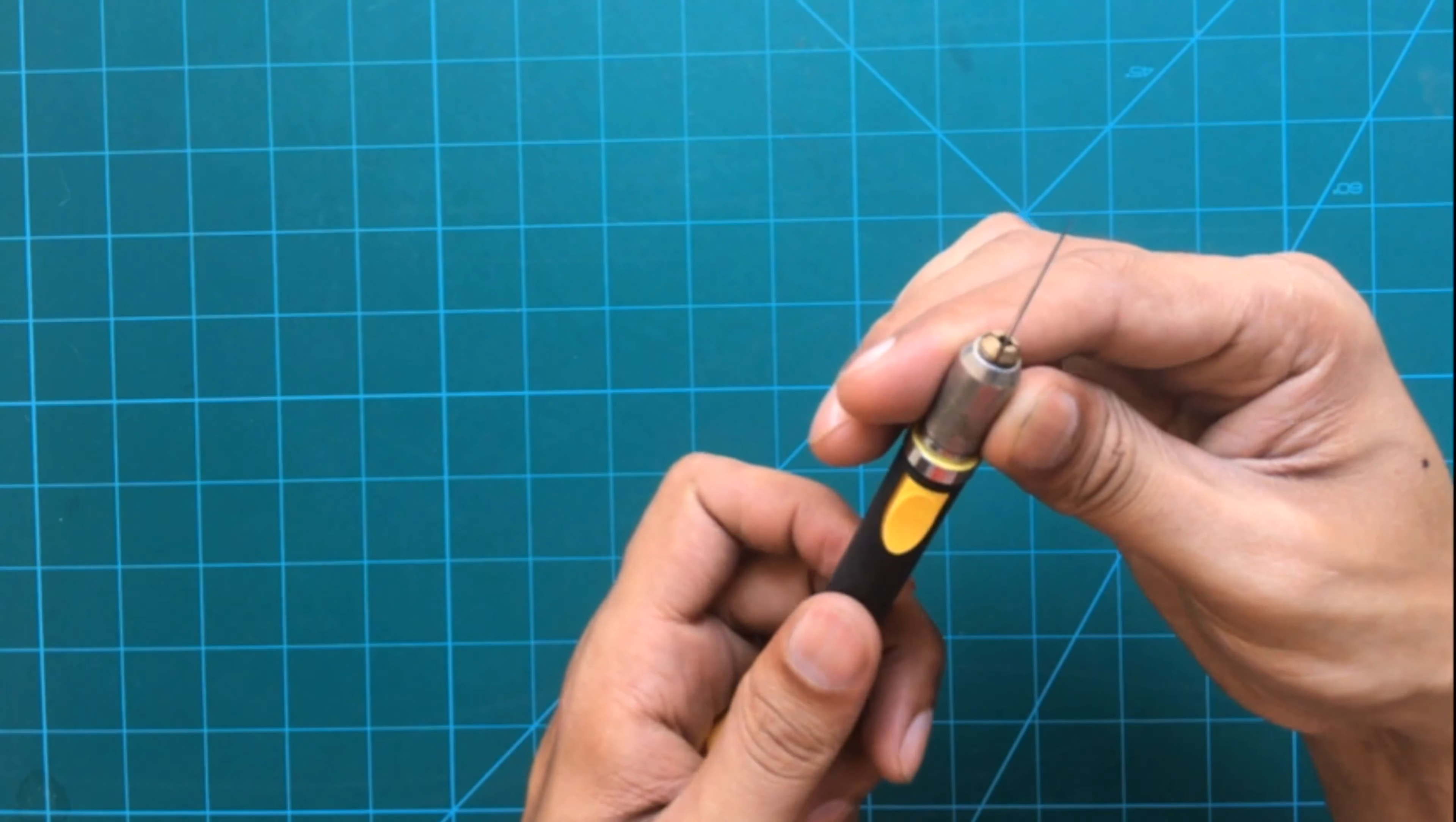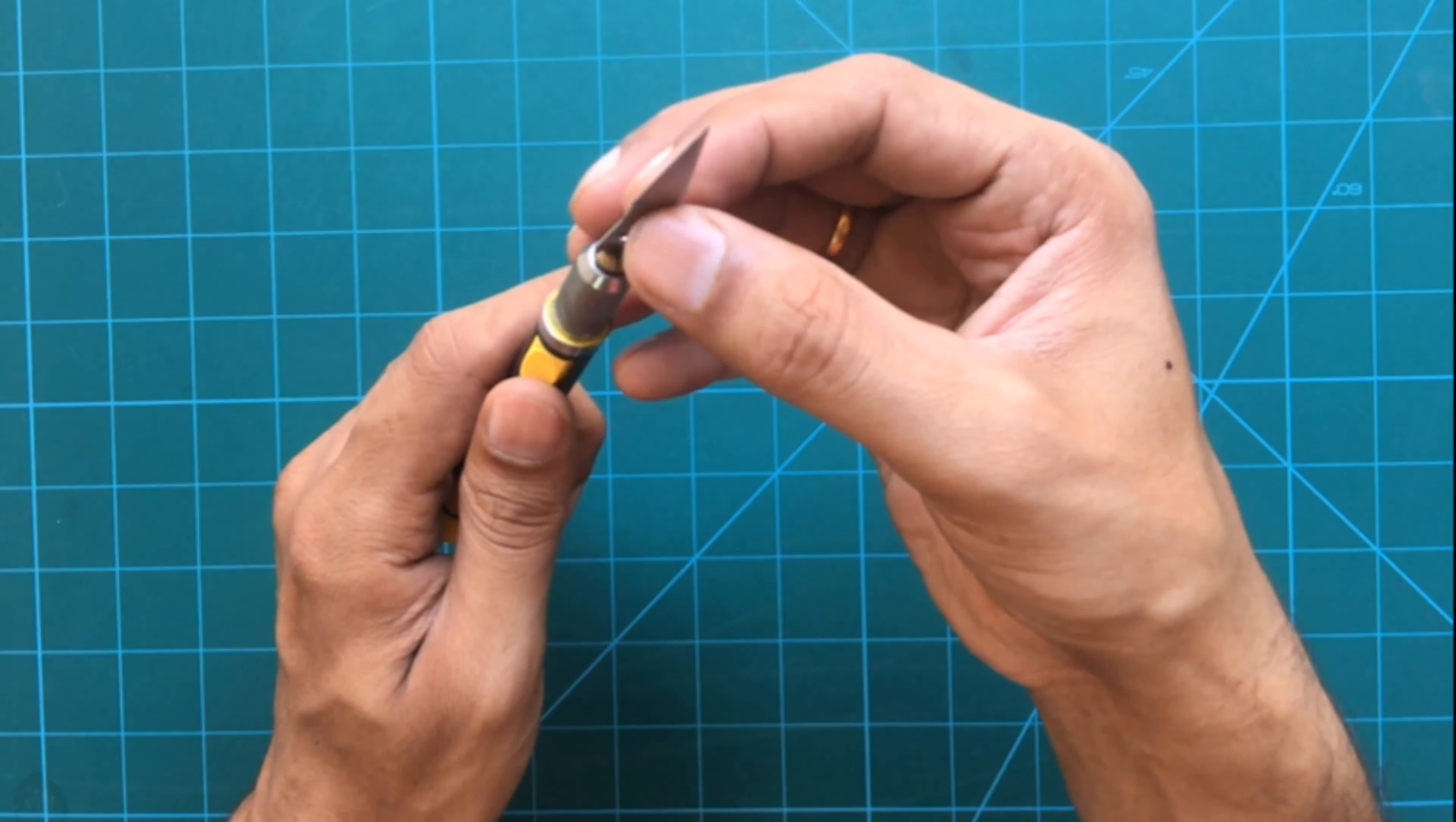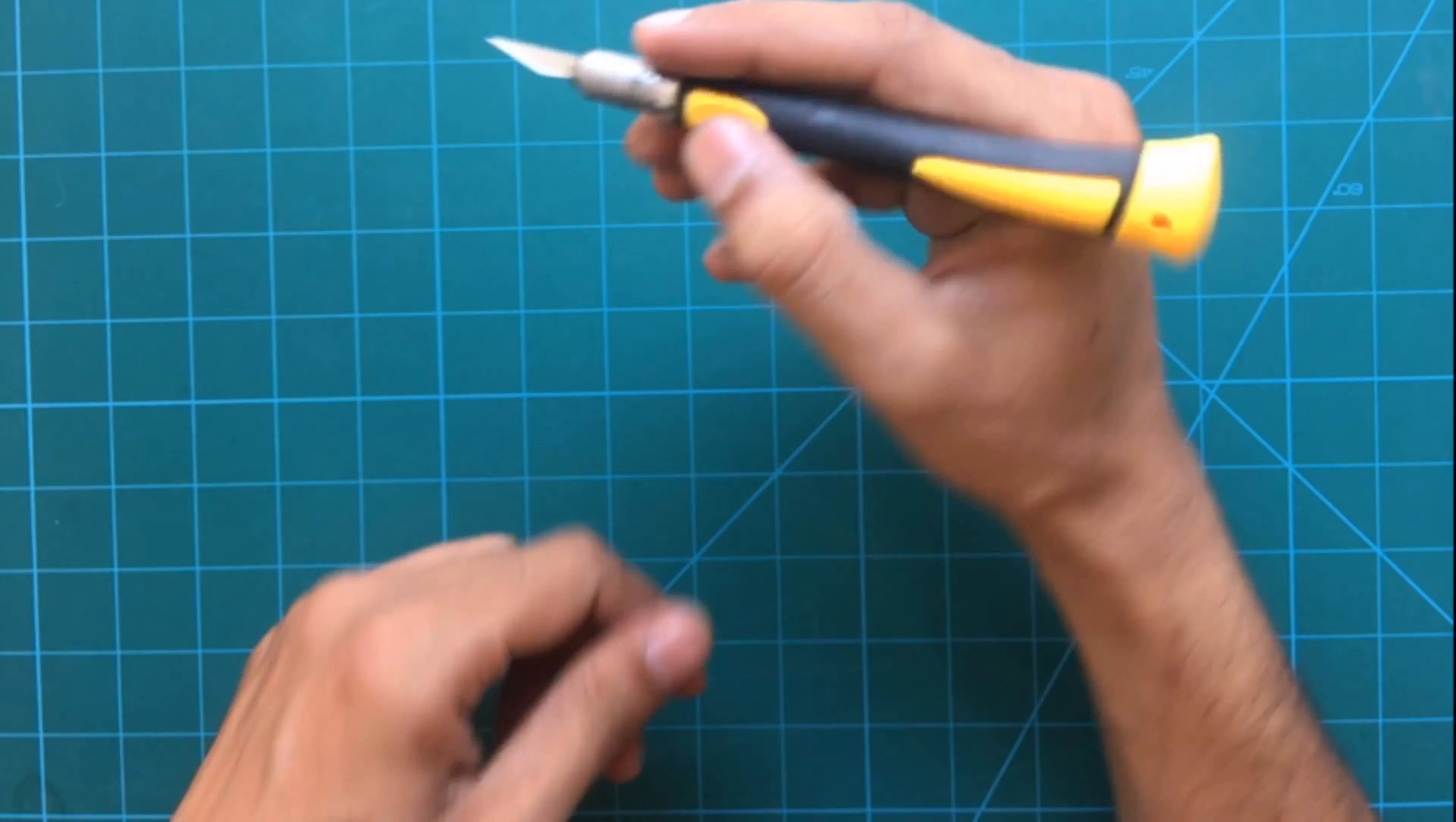To change the blade, you need to gently unscrew the top portion of the knife and the blade will become loose and you can pull it out. To put the blade back in while the knife is unscrewed, you need to insert the blade again into the knife and then screw the top back again to tighten the blade.